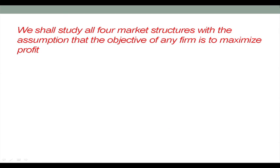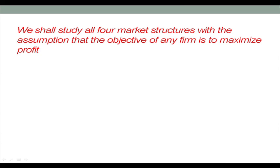These are the assumptions of perfect competition. Before we discuss how the producer decides how much output to produce and what price to charge — the question we will ask for each market structure — we are making the assumption that we shall study all four market structures with the assumption that the objective of any firm is to maximize profit. Profit maximization is the objective of the firm, and that is something we will assume throughout the course.